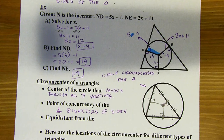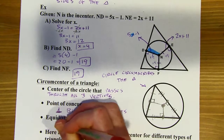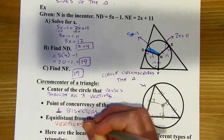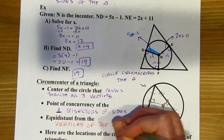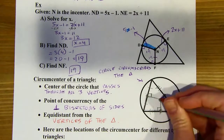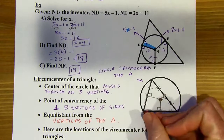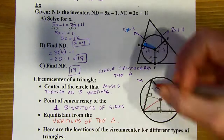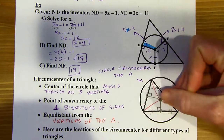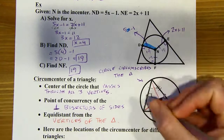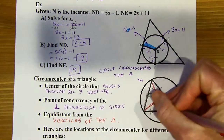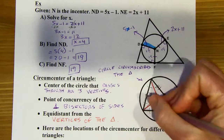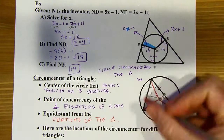The circumcenter is also the point of concurrency of the perpendicular bisectors of the sides of the triangle. It's going to be equidistant from the vertices of the triangle. So if I draw line segments from the circumcenter to each corner — each vertex — those three segments are all going to be congruent.